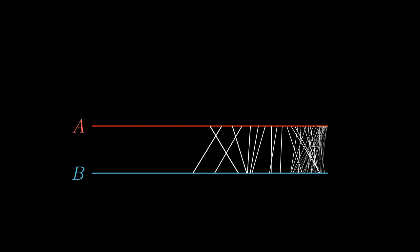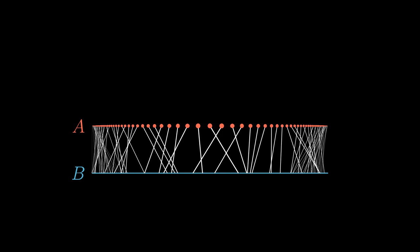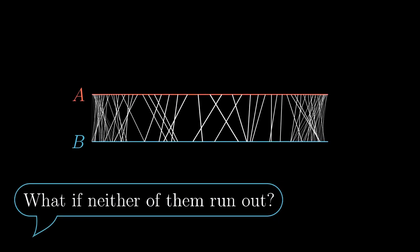Since we are using transfinite recursion, we don't stop even when we use an infinite number of edges. Once there is no way to add any new edge, we must have filled one of the sets — so A is smaller or of the same size. It is clear that if the recursive process stops, so we can't add any further edge, we have found a matching covering one of the sets.